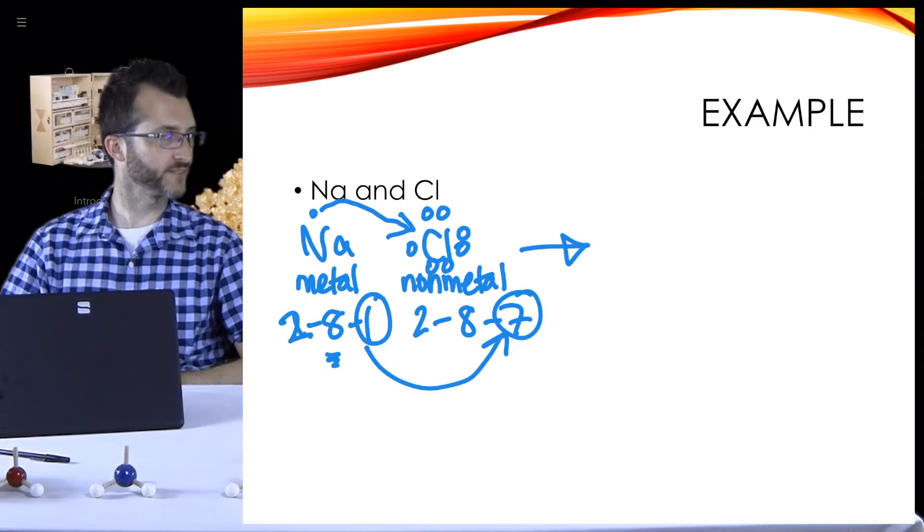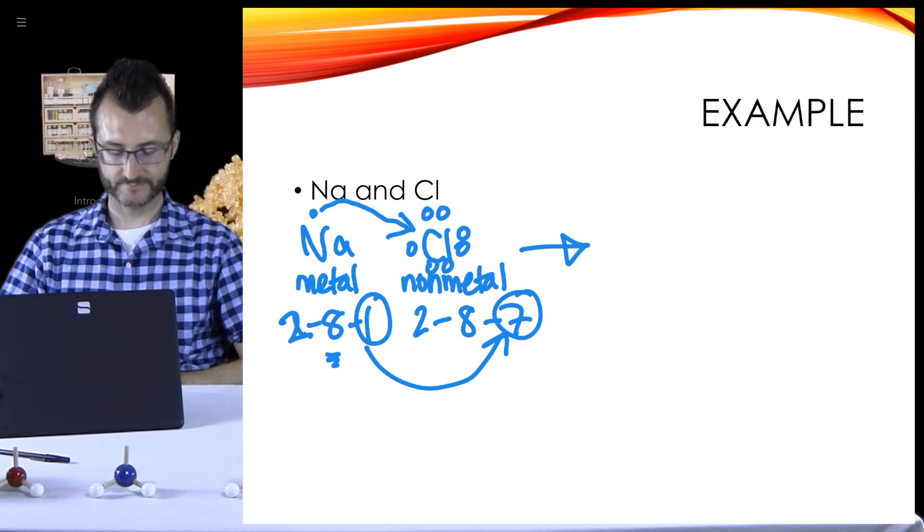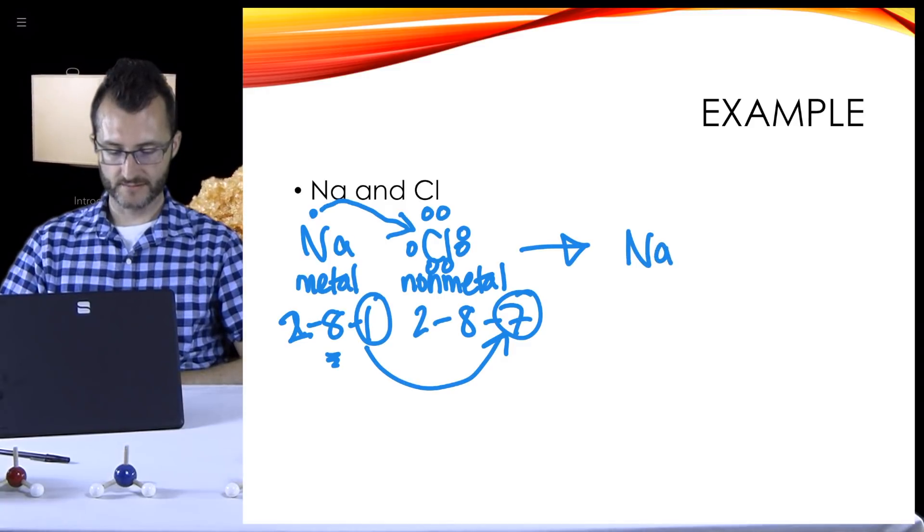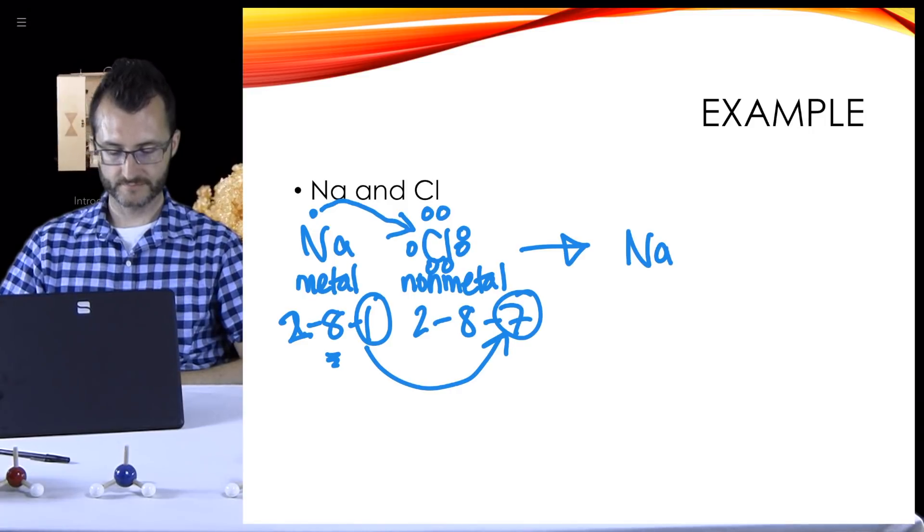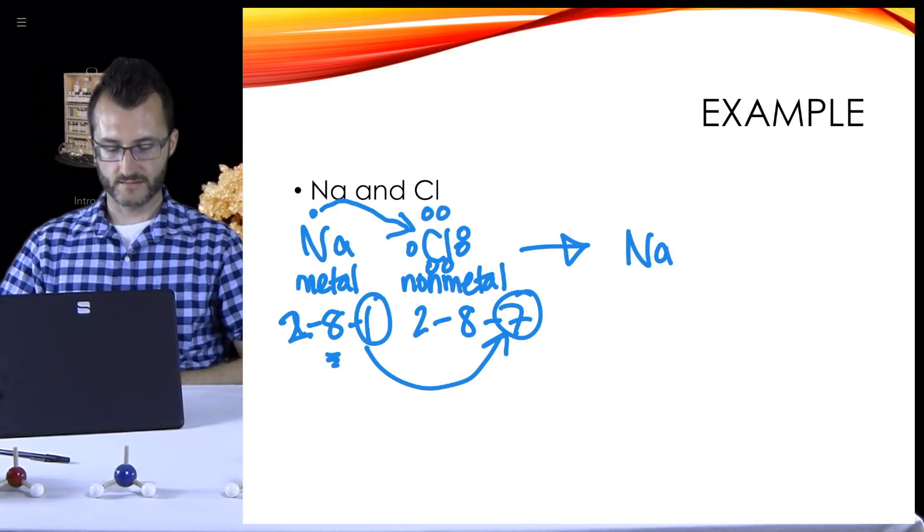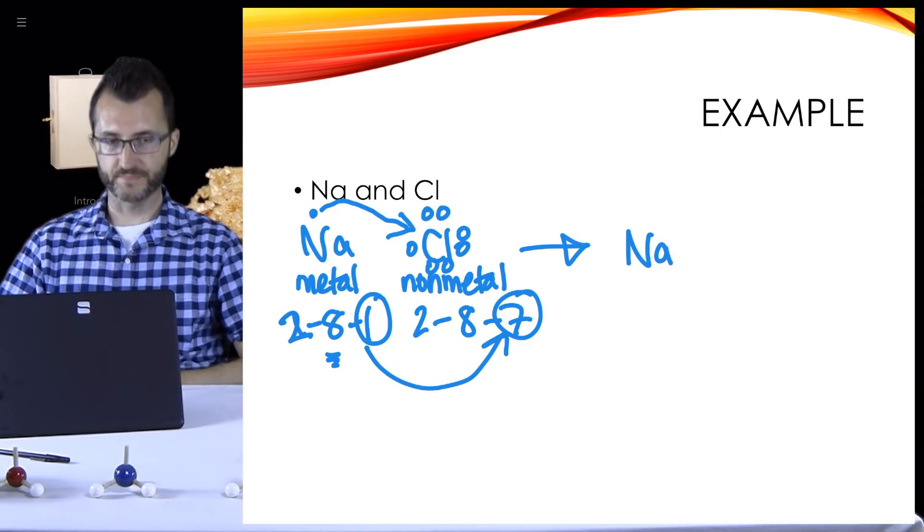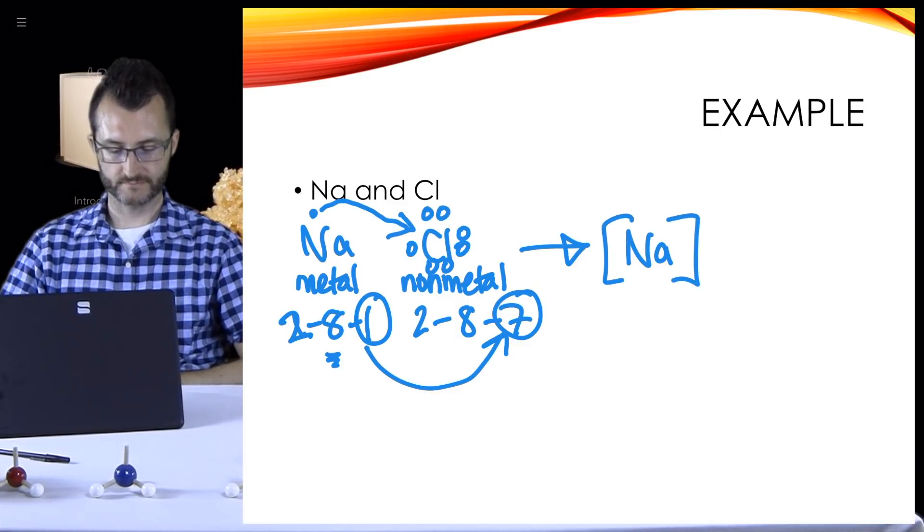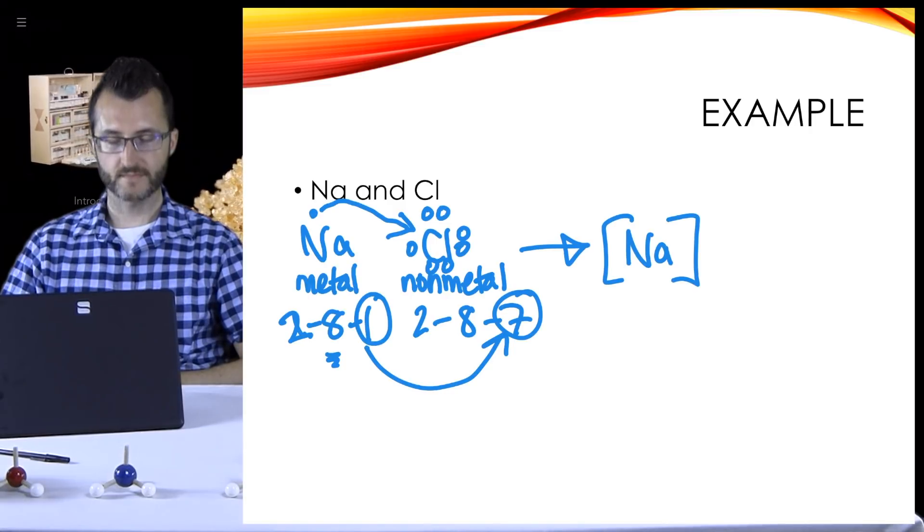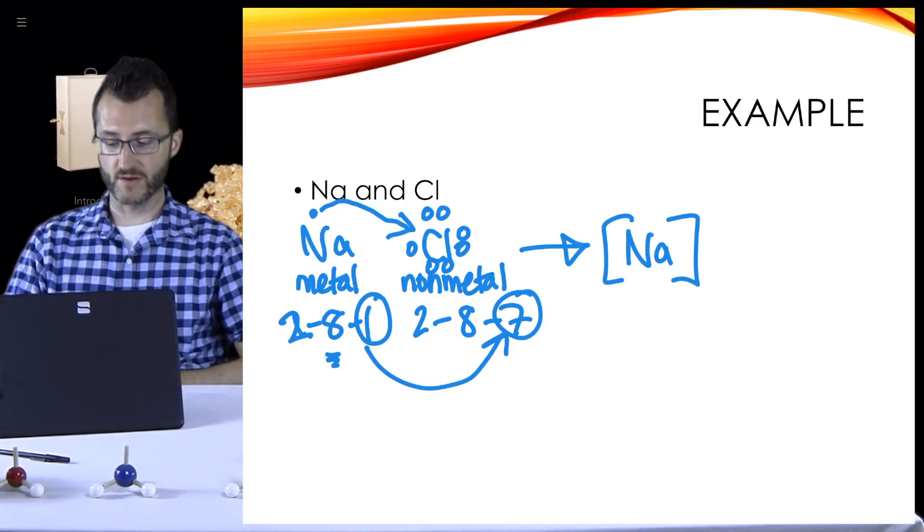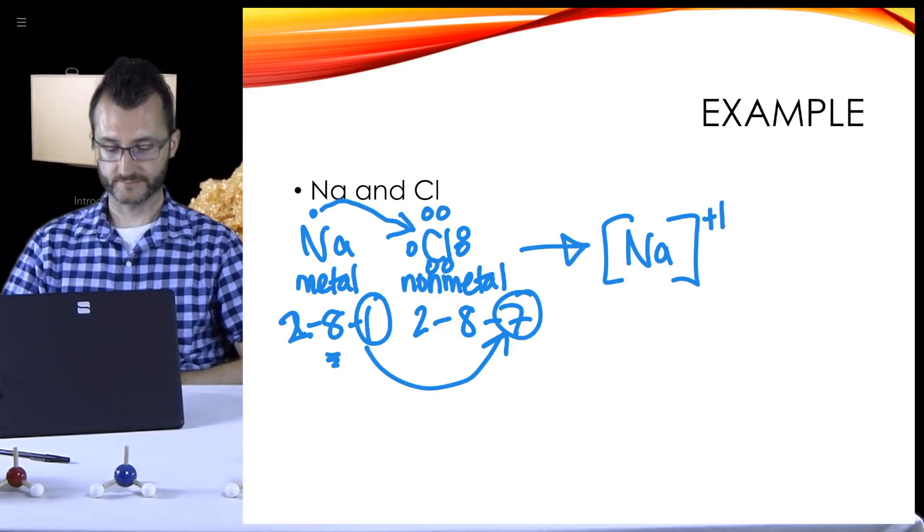So now what do I do? I transfer. Now we've transferred. Now we have to draw them with the dots shown being transferred. So sodium lost its dot, right? So no dots. And we need one thing on here that we have in our instructions. What do we need on anything once it's lost or gained electrons? It needs some sort of a charge with brackets. So we draw brackets around our entire element.